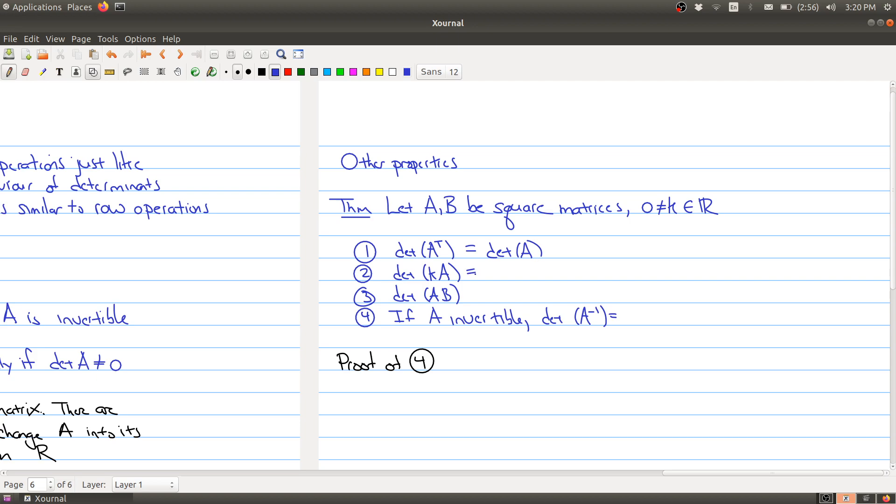What happens if you multiply a matrix by a constant? Well, then the determinant is going to be k to the n times the determinant of A, under the assumption that A is an n by n matrix.